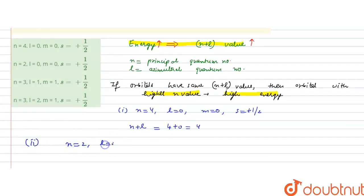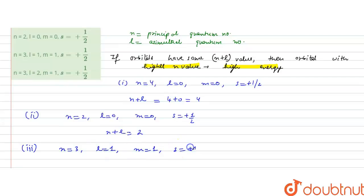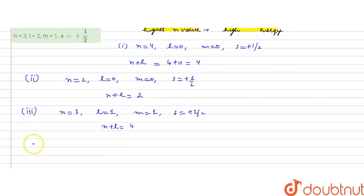For option B: n=2, l=0, m=0, s=+1/2. The n plus l value is 2 plus 0, which equals 2. For option C: n=3, l=1, m=1, s=+1/2. The n plus l value is 3 plus 1, which equals 4.